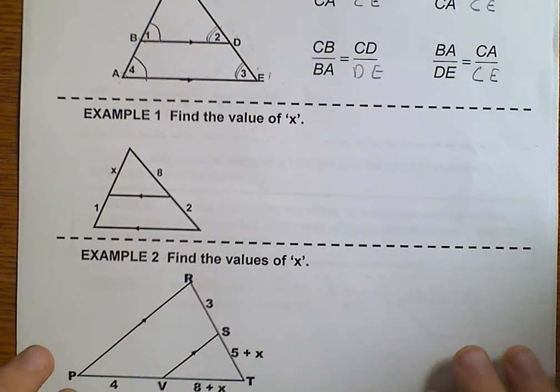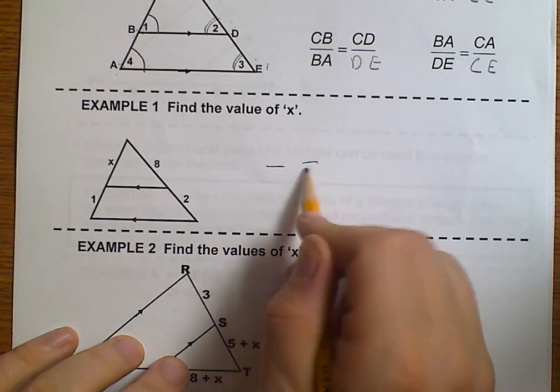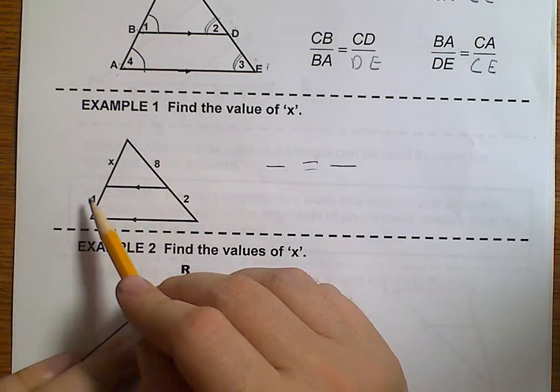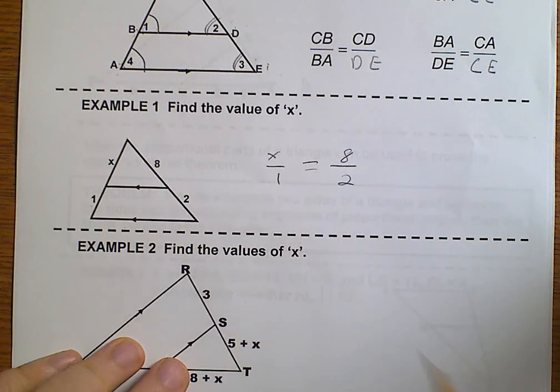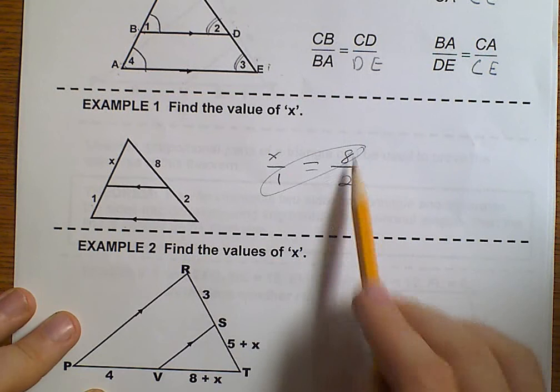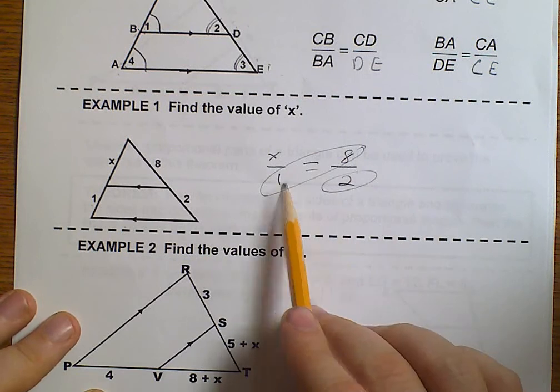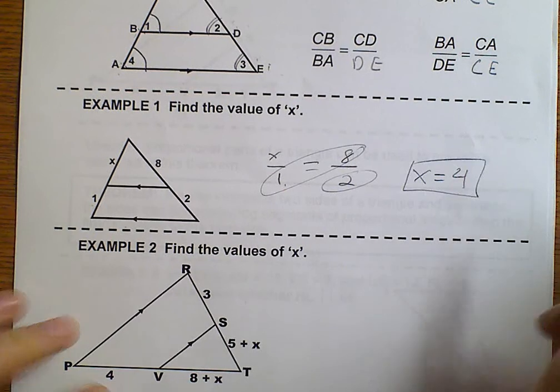So let's go to our first example. We want to find the value of X. We're going to set up a proportion: X over 1 equals 8 over 2. It's really that simple. We cross multiply and divide. 8 times 1 is 8 divided by 2 is 4. So X equals 4.